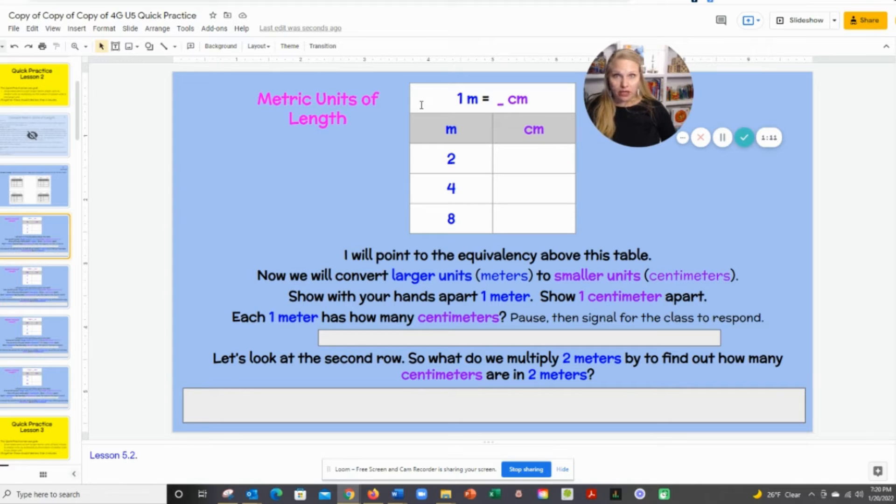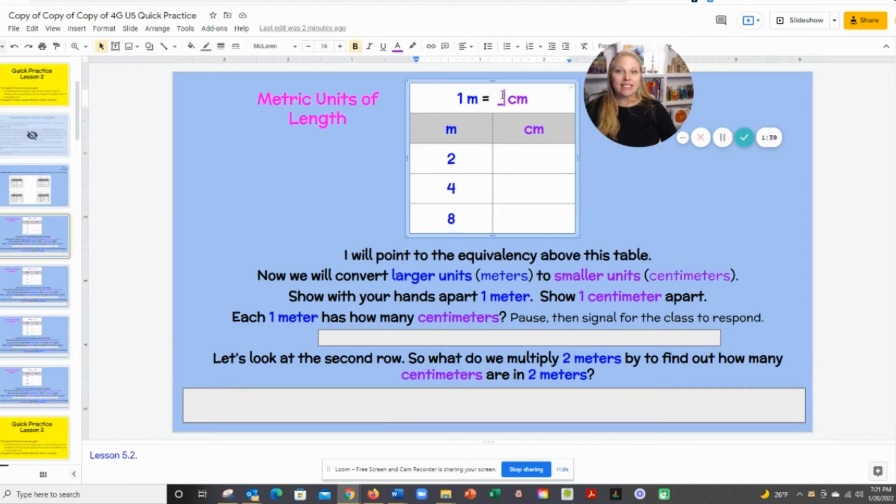Now show a centimeter. Students should be showing about how much a centimeter is. A centimeter is like the width of my pinky finger. Remember having those benchmarks, something they've been working on since first grade, is helping students internalize about how much something is. Each one meter has how many centimeters? Class, the class would say 100 centimeters. As they say that, then the student leader can write 100 centimeters up in the top. So one meter, read it with me, one meter equals 100 centimeters.